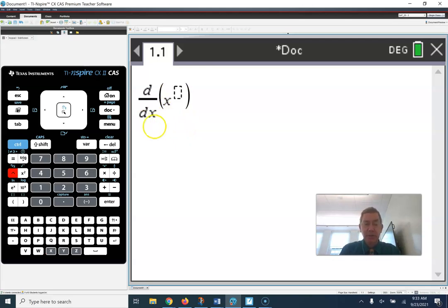X cubed, perhaps. And the derivative of x cubed is 3 times x squared. Very straightforward.